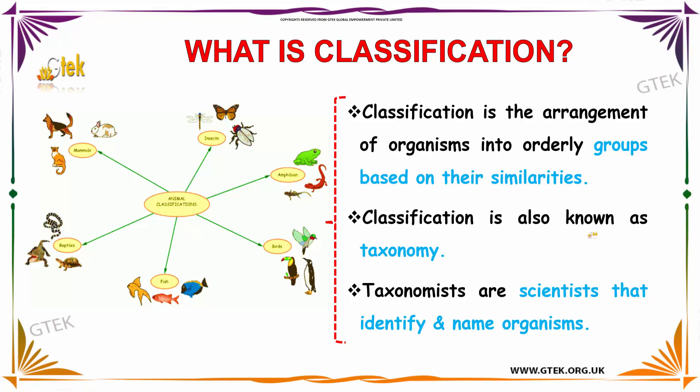If you see about modern classification, we should know what is classification. The classification is the arrangement of organisms into orderly groups based on their similarities. You can see it over here. The classification is also known as taxonomy. Taxonomists are scientists that they are identifying and naming organisms.